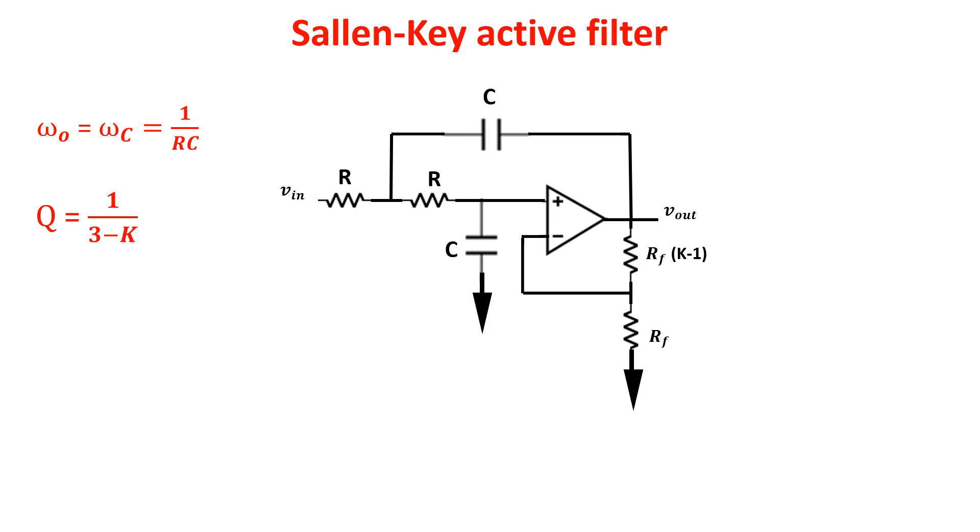About the quality factor, if you want for example a Butterworth type of response to achieve flatness on the passband, the best value of Q is 0.707 so the gain has to be 1.586.